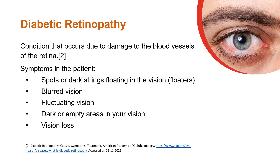Diabetic retinopathy is a condition that occurs due to damage to the blood vessels of the retina. Symptoms of diabetic retinopathy include spots or dark strains floating in the vision, blurred vision, fluctuating vision, dark or empty areas in your vision, and vision loss.